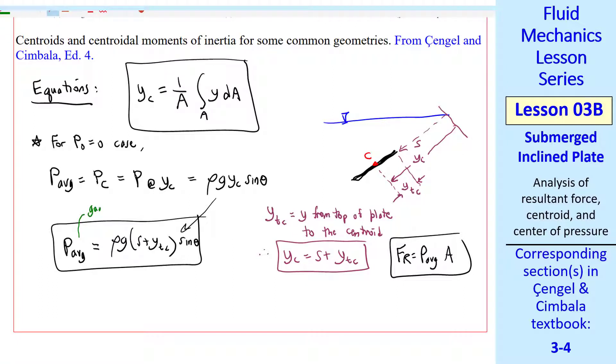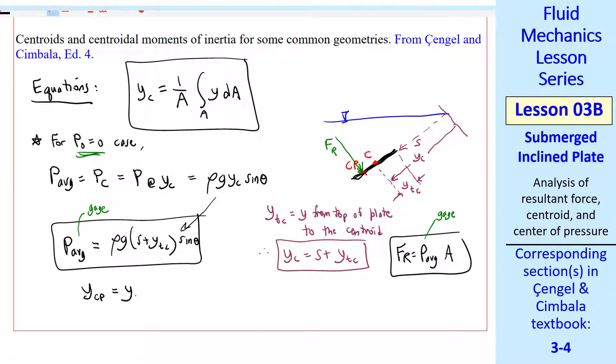So FR then is P average times A. Keep in mind that these are gauge pressures when we set P naught equals 0. Finally, the location of the center of pressure is where this resultant force acts. And YCP, or just YP, these mean the same thing, is equal to YC plus IXXC over YCA.